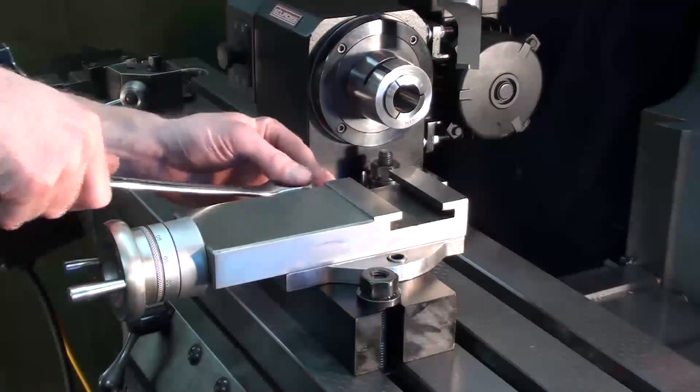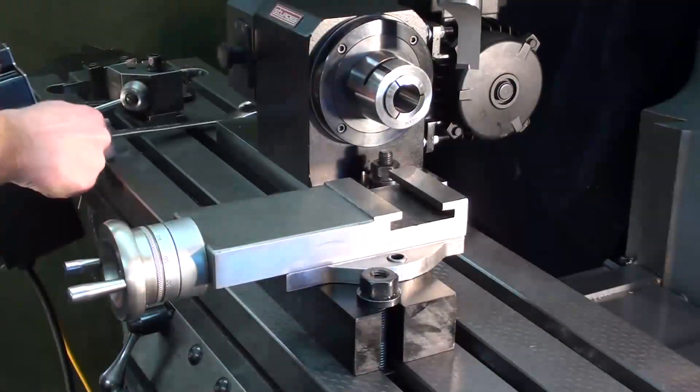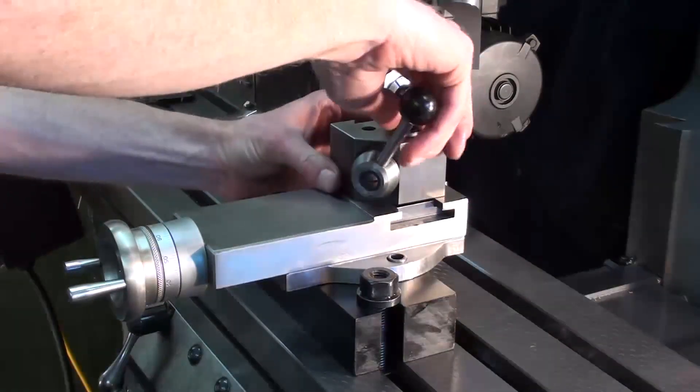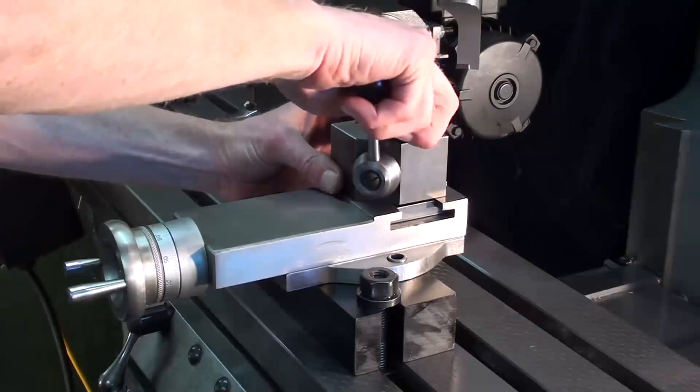We also offer a cross-slide accessory that bolts out of the table right next to the turning head. This allows you to part off the work using your standard lathe tool post, your standard lathe tool holder, and a parting tool.